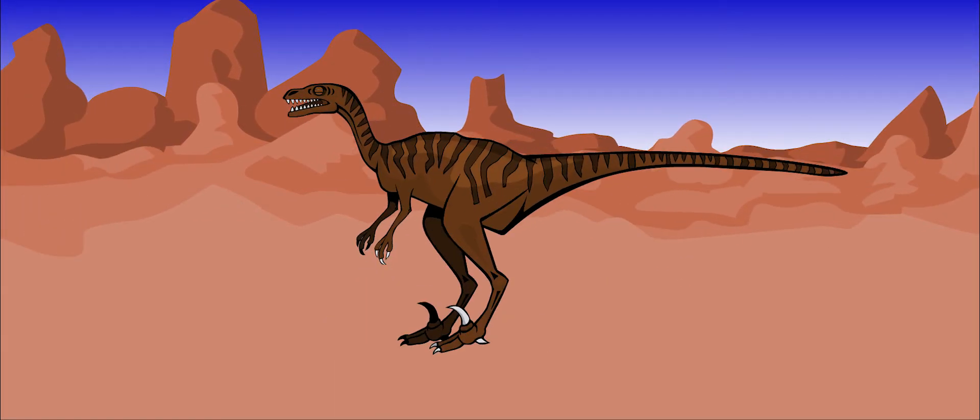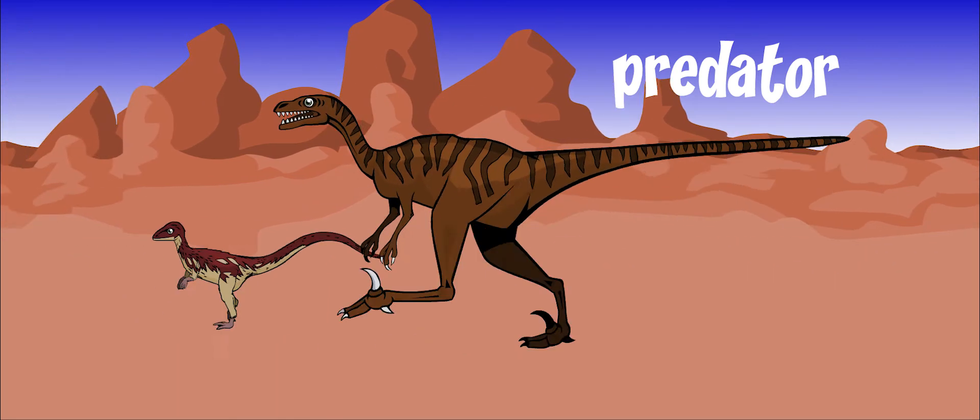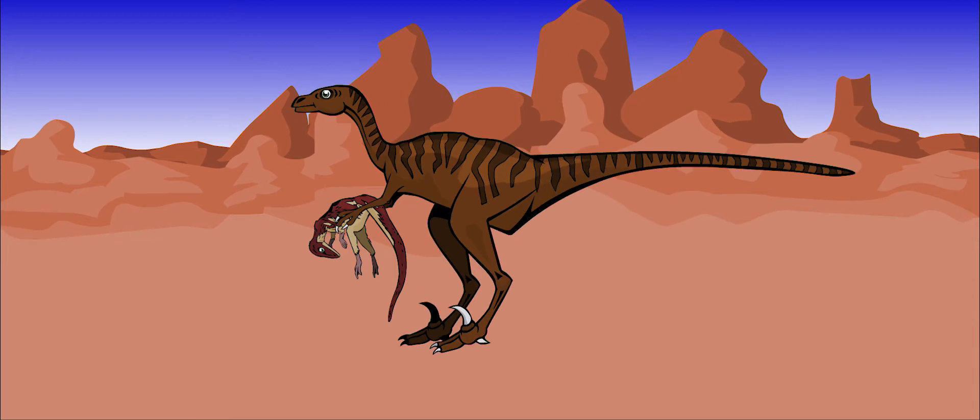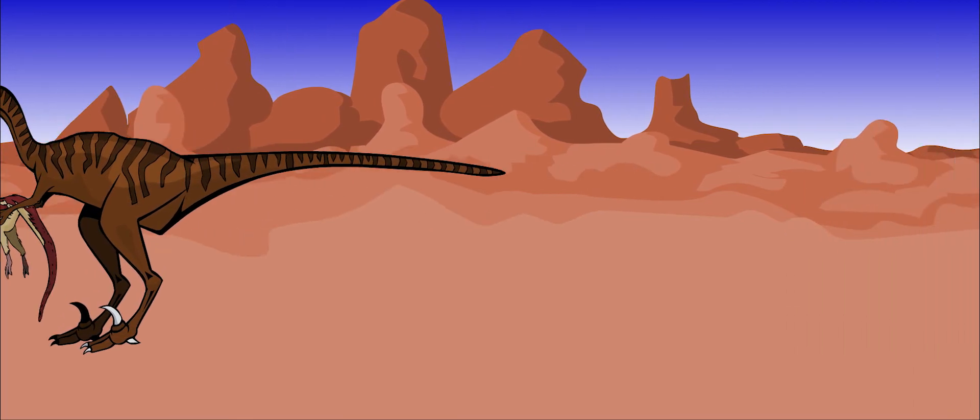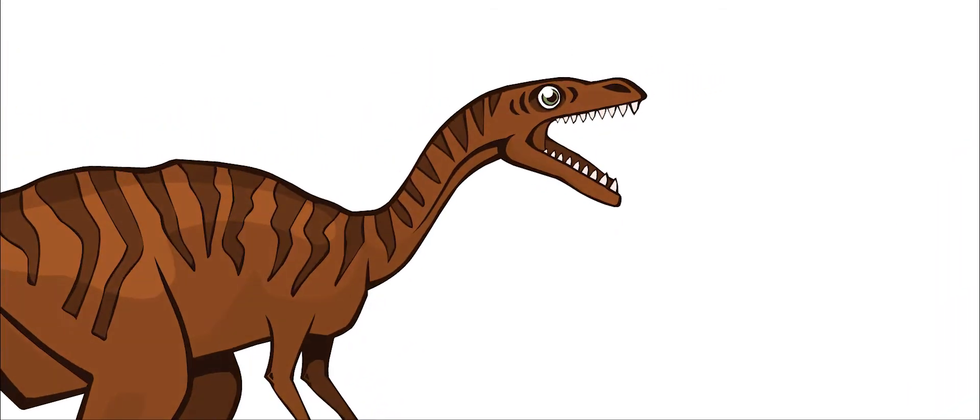Velociraptor was a dangerous predator, meaning that it hunted other animals for food. Its neck was long and shaped like an S, so it could strike at its prey like a snake. This meat-eater had 80 very sharp curved teeth and powerful jaws.